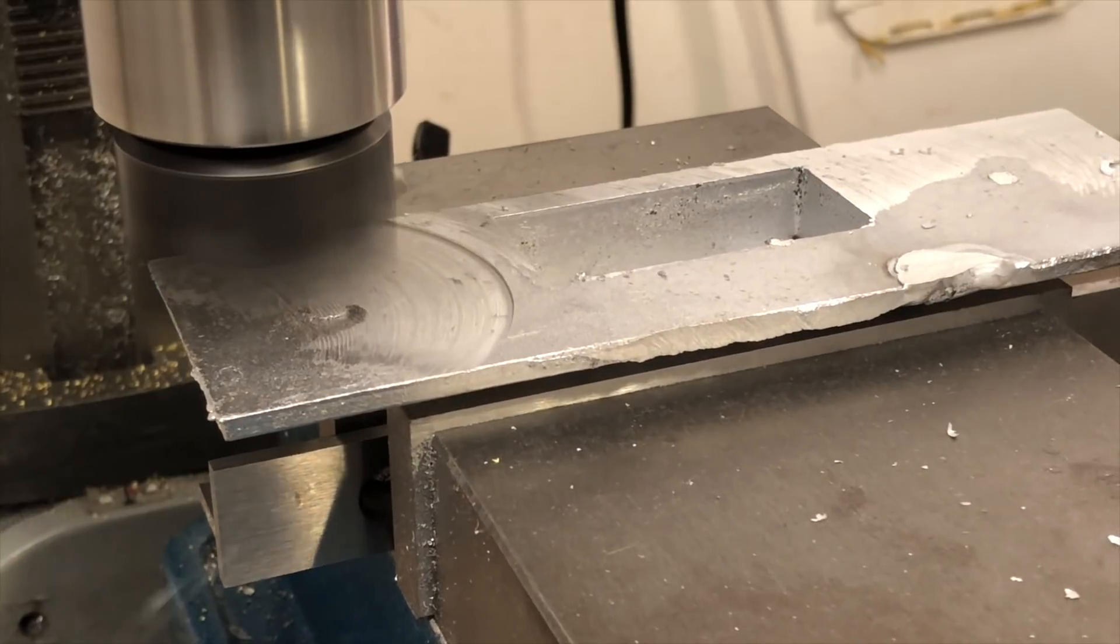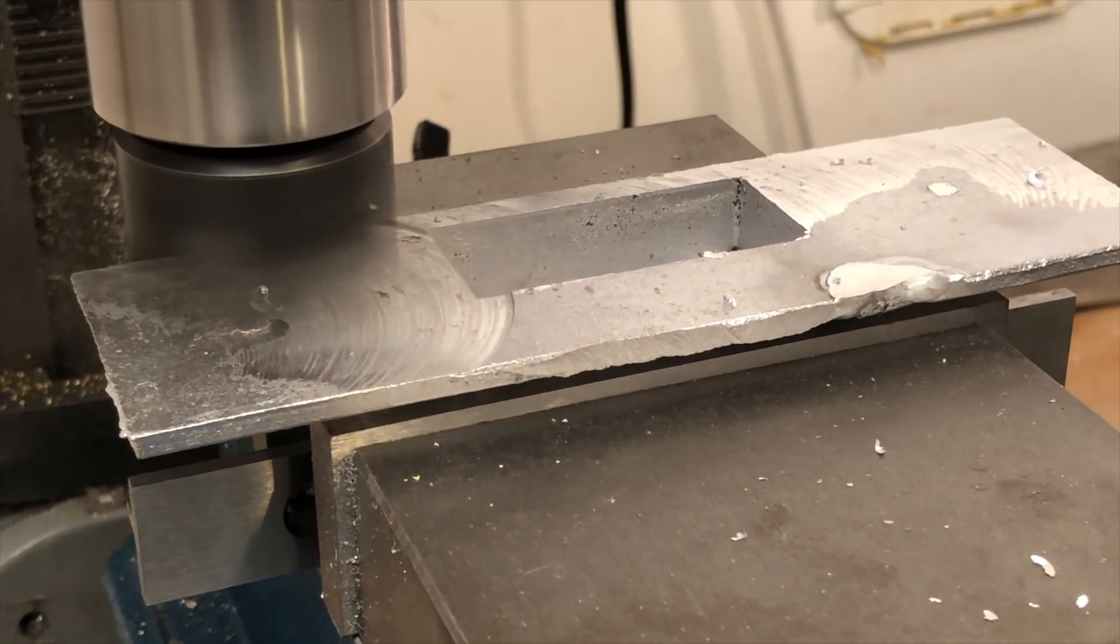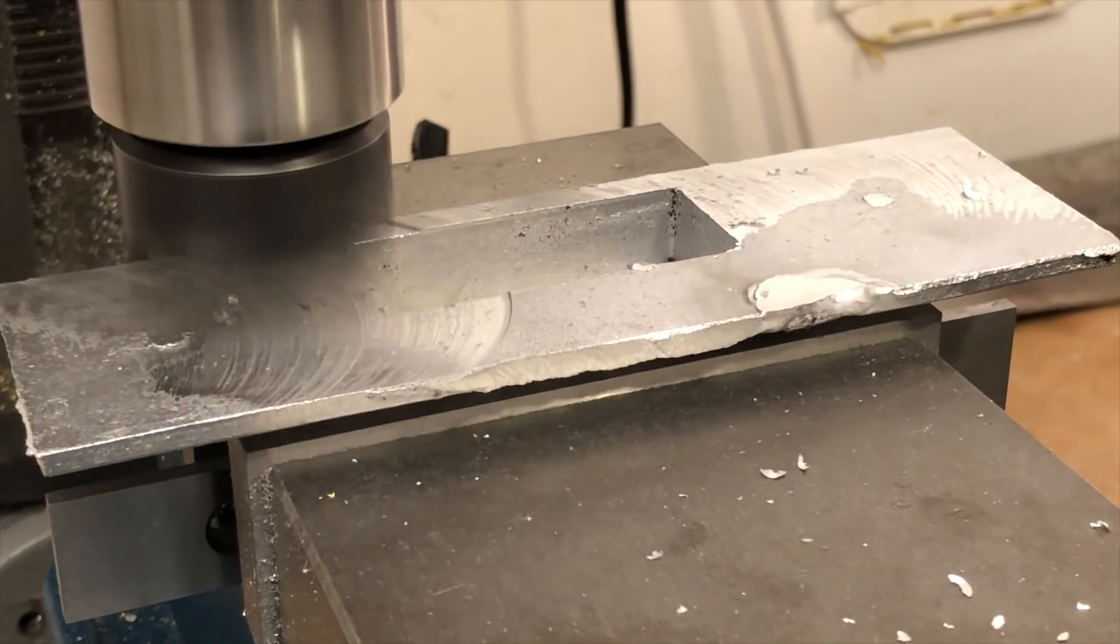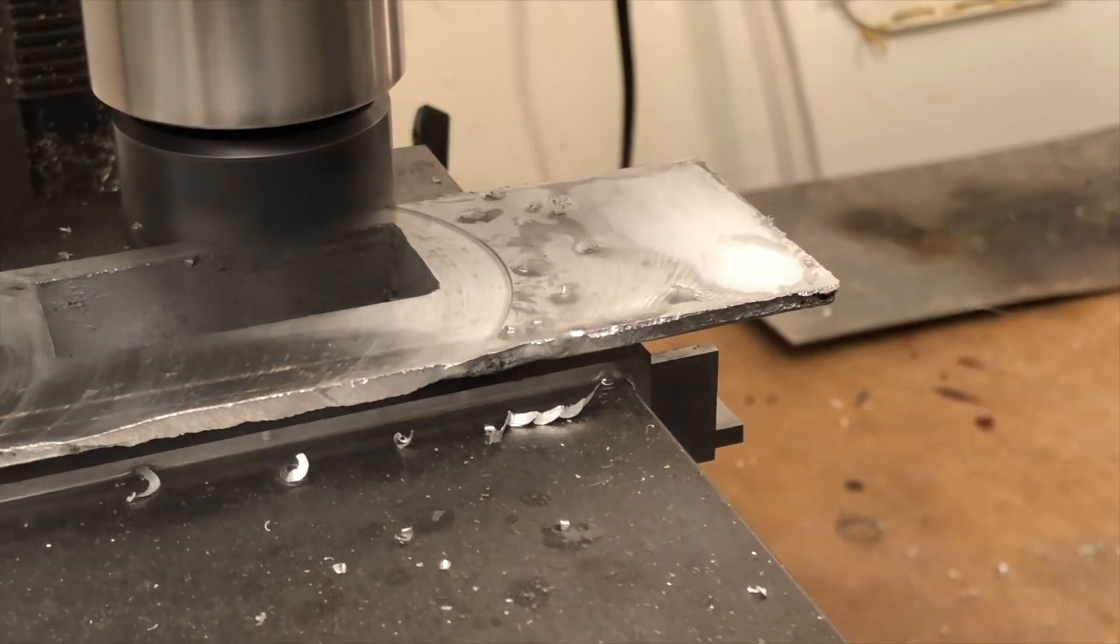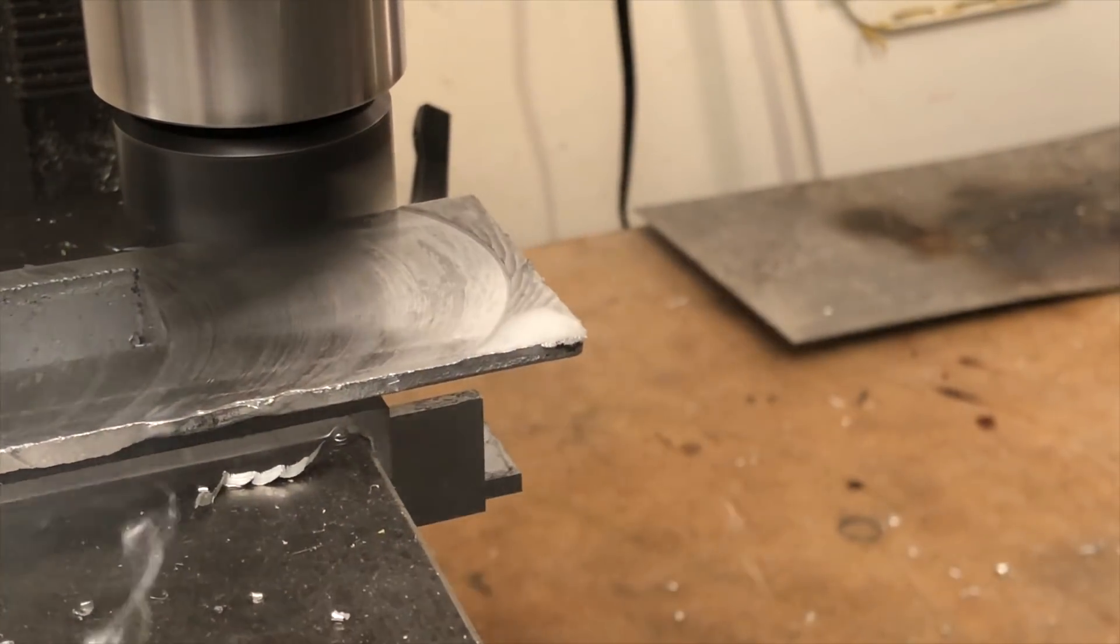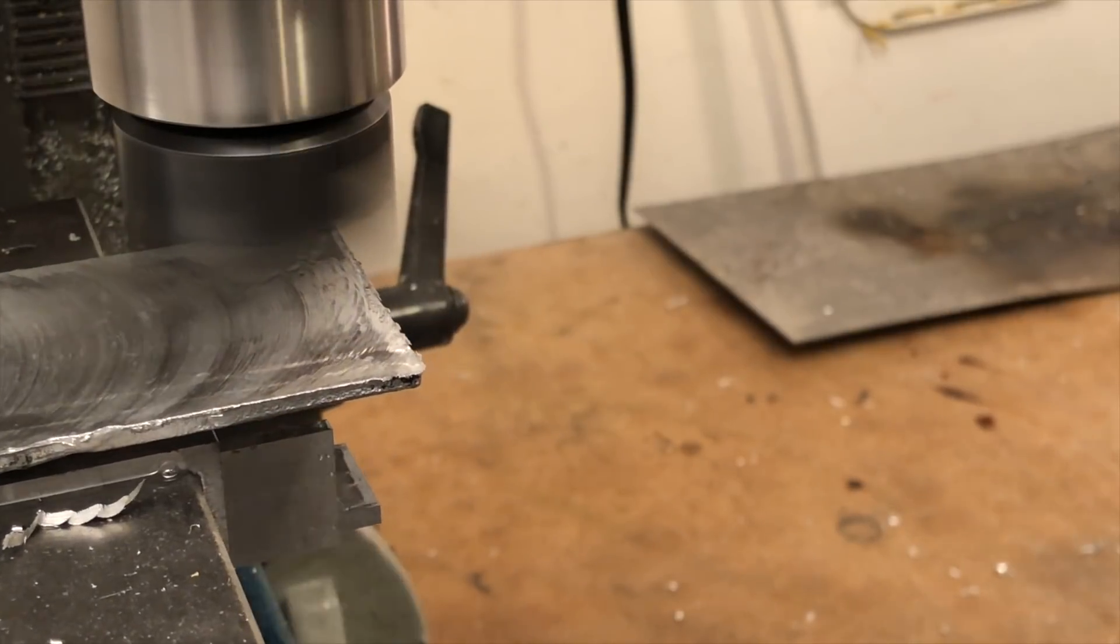It's now time to move over to the mill. The first thing I'm going to do is take a fly cut across the bottom of the part. As you can see, these unsupported ends produce a little bit of chatter, but that's not that big of a deal.